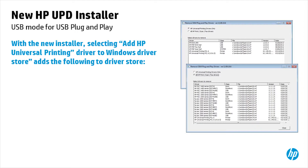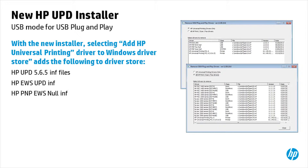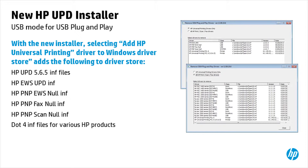With the new installer, selecting Add HP Universal Printing Driver to Windows Driver Store adds the following to the Driver Store: HP UPD 5.6.5 INF files, HP EWS UPD INF, HP PNP EWS NULL INF, HP PNP FAX NULL INF, HP PNP SCAN NULL INF, .4 INF files for various HP products, and HP Printer LEDM INF.